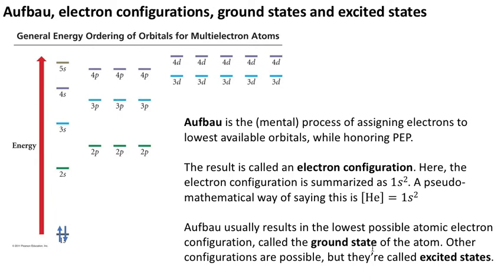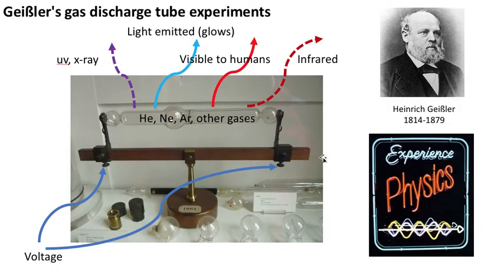Aufbau usually results in the lowest possible atomic electron configuration, called the ground state, because it is the lowest energy state of the atom. That's not to say that other configurations are impossible—they are certainly possible—but they all get called excited states.